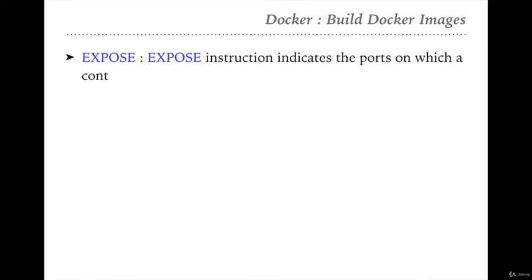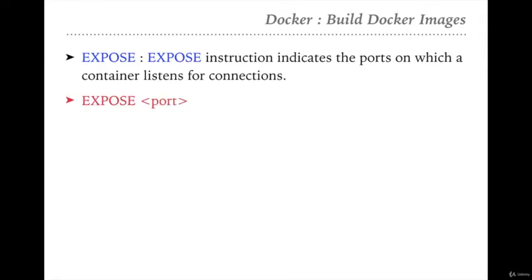Next we will talk about EXPOSE. The EXPOSE instruction indicates the port on which the container listens for connections. With EXPOSE, we can define the ports where our application will run. For example, when running NGINX on port 8080, that port which the container runs on internally can be defined with EXPOSE. After the port, you can also define the protocol over which that port will be opened. The format is: EXPOSE, then the port number.